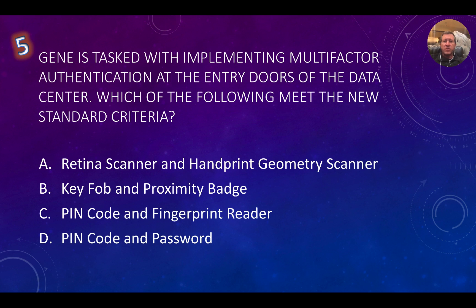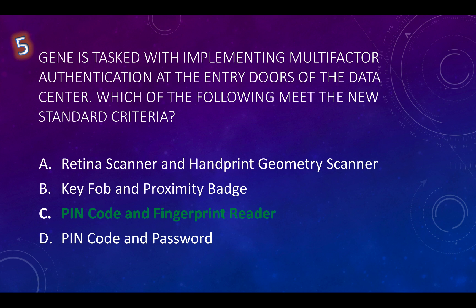Question number five: Gene is tasked with implementing multi-factor authentication at the entry doors of the data center. Which of the following meet the new standard criteria? Looking at options A, B, and C, there are two types of authentication but they're still single factor. A retina scanner and handprint geometry scanner are both biometric. Key fobs and proximity badges are both something you have. A pin code and password are both something you know. But a pin code is something you know, and a fingerprint reader is something you are — so that combination meets the requirements for multi-factor authentication.